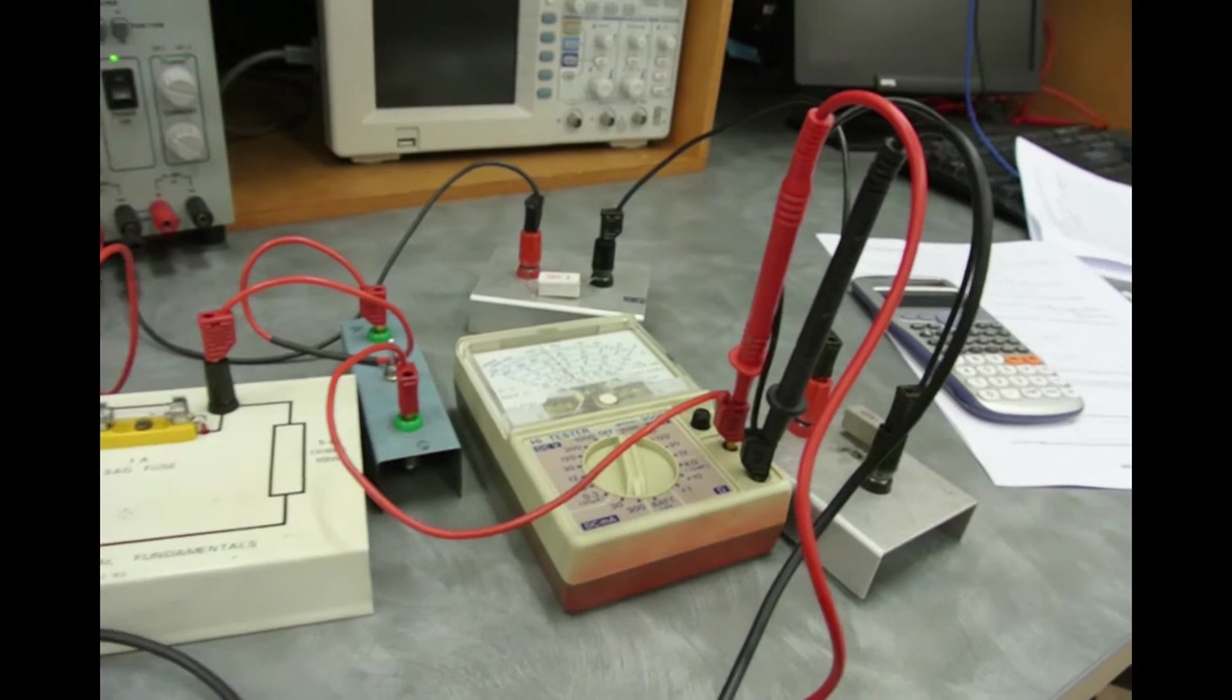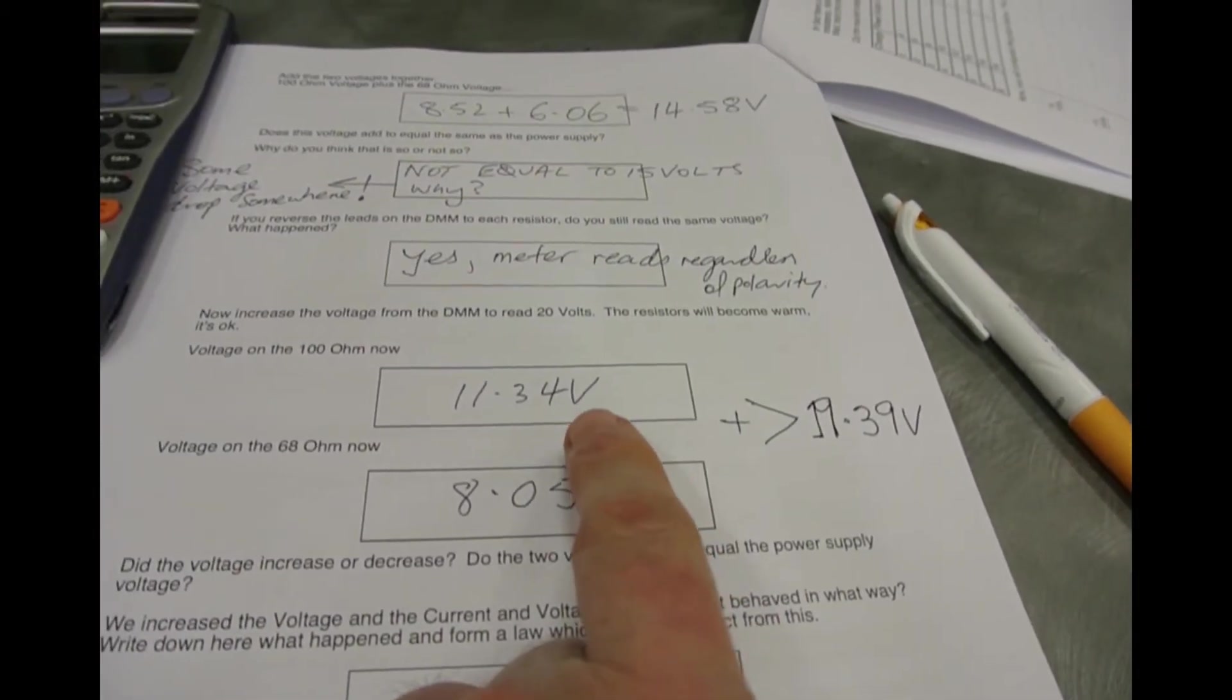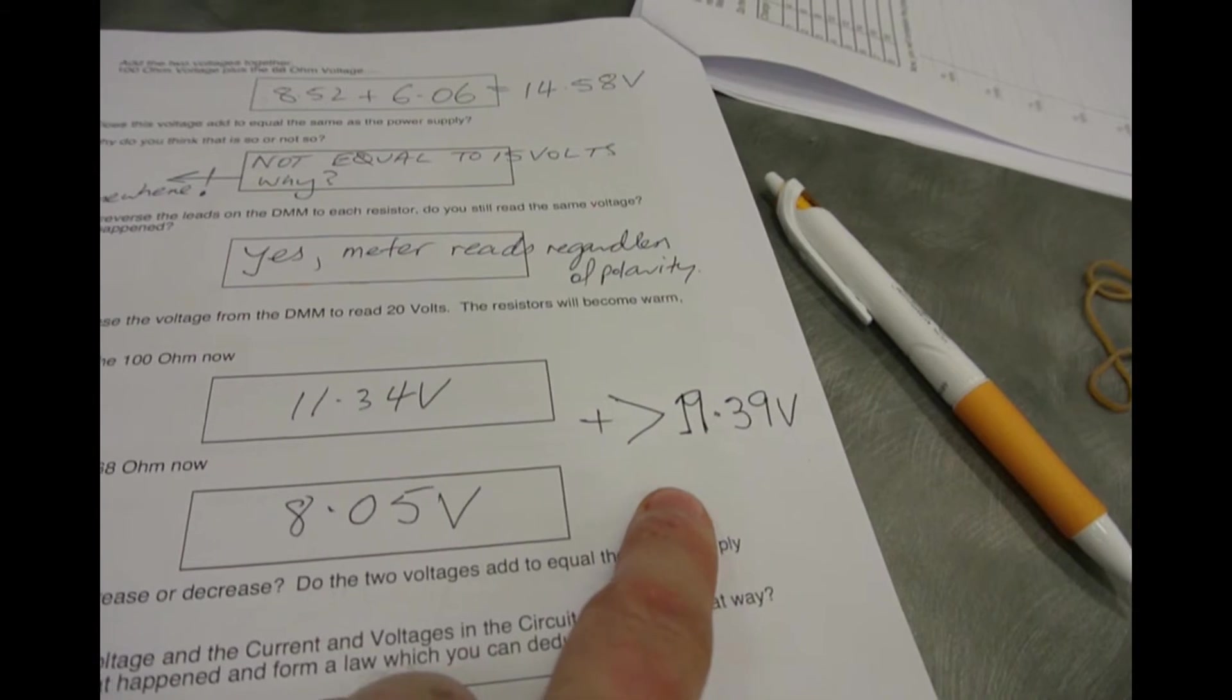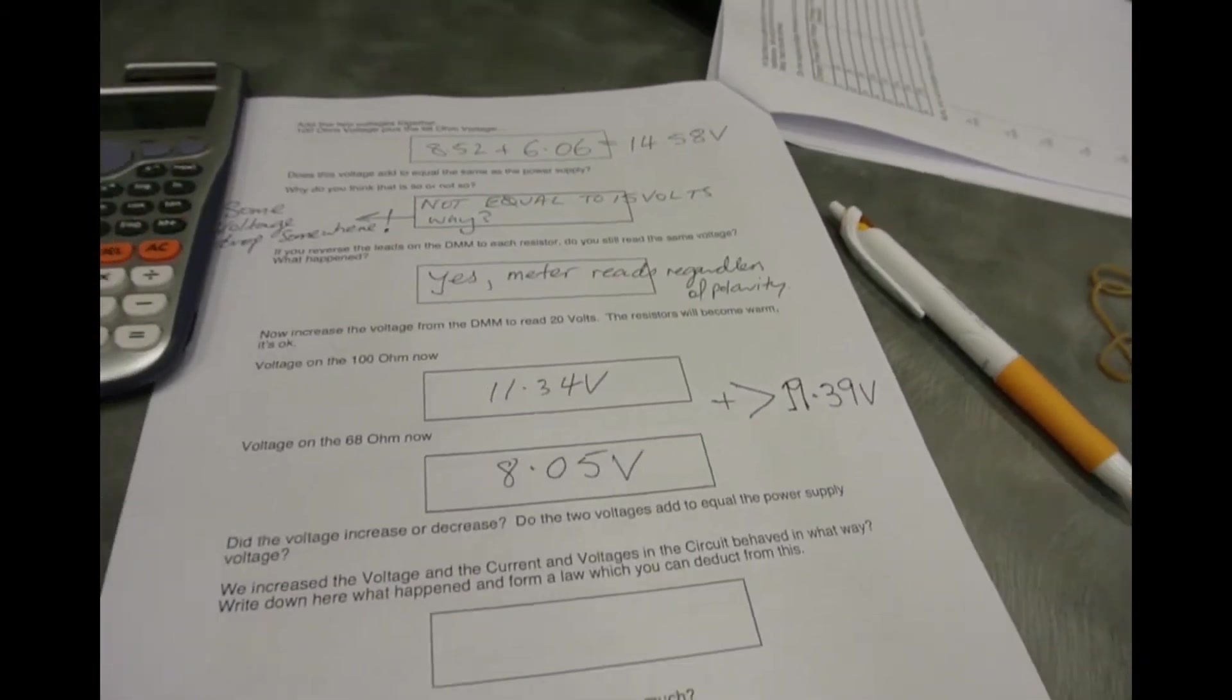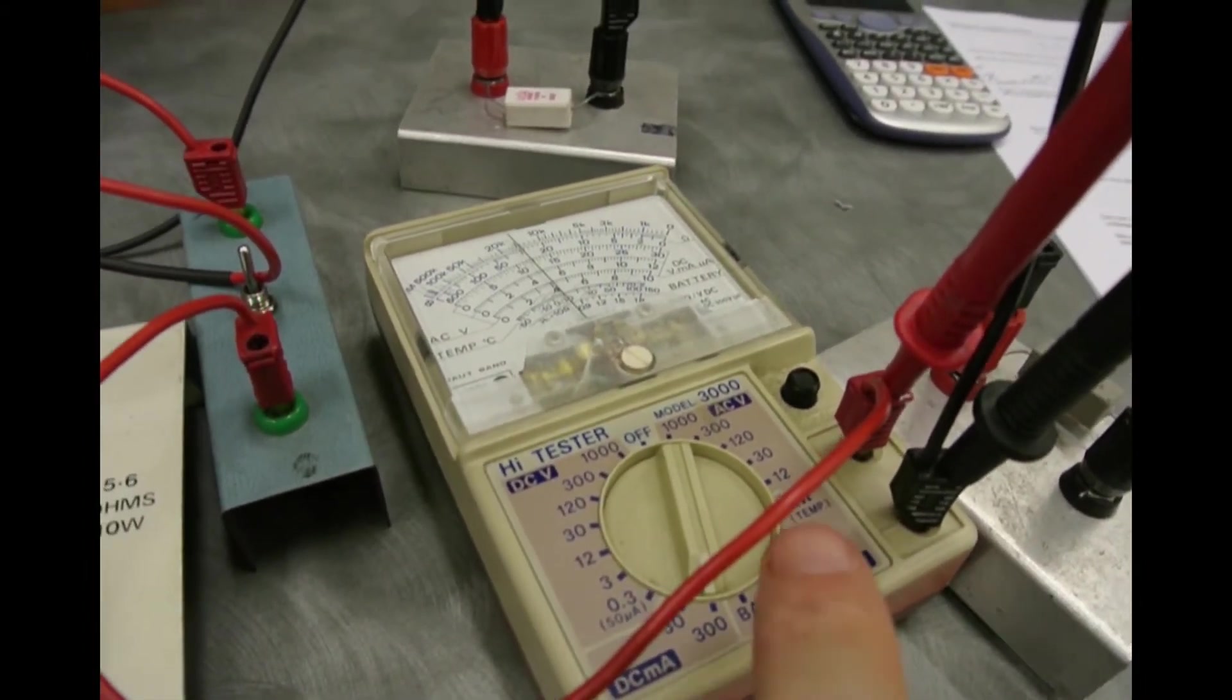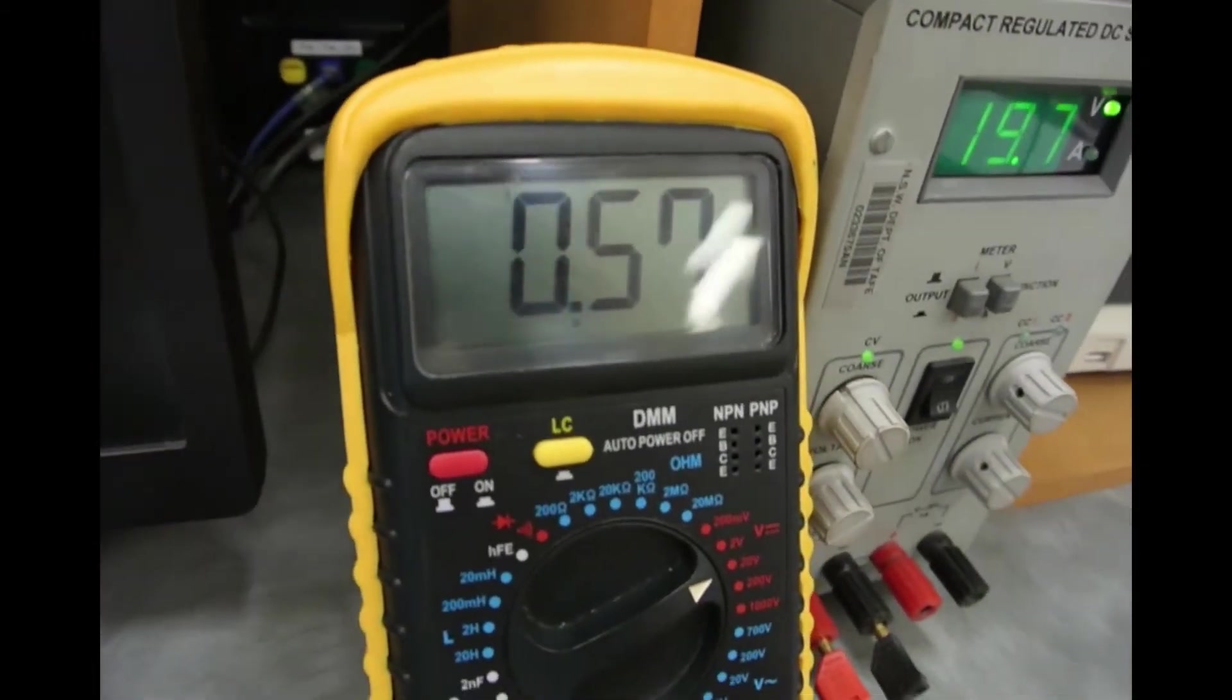Let's add those up and see where we're at. We find that the two voltages didn't add to the supply voltage of 20 volts. We had 11.34 volts plus 8.05 volts, which added to 19.39 volts, yet we had a supply voltage of 20 volts, so we're missing quite a bit.